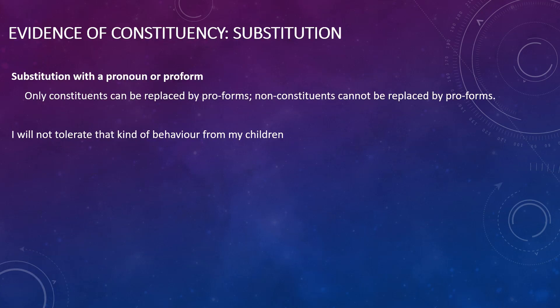Evidence of constituency — substitution. A pronoun or pro-form tends to be words like he, she, it, they, we, etc. A pronoun can replace a noun phrase constituent in a sentence, but it cannot replace a non-constituent. So when we are able to replace a chunk of words with a pronoun, it suggests that we are dealing with a noun phrase constituent.